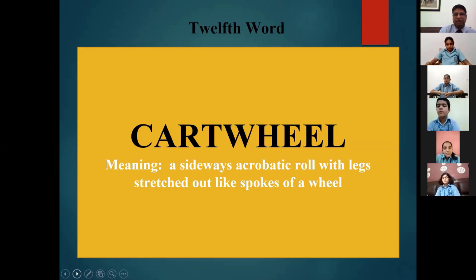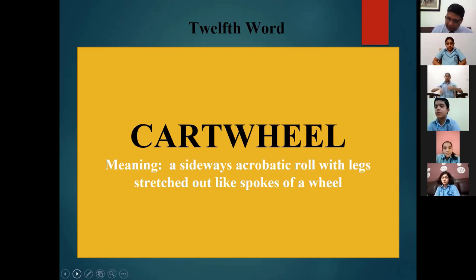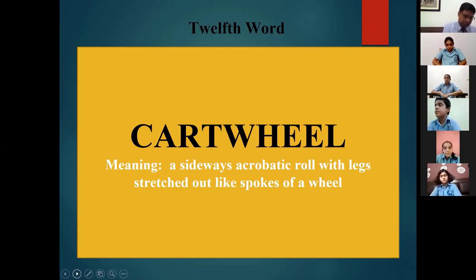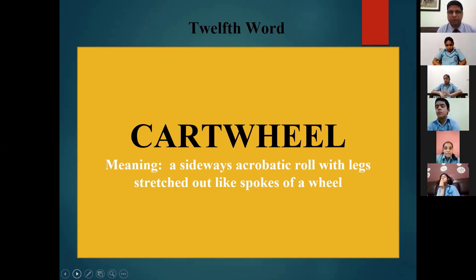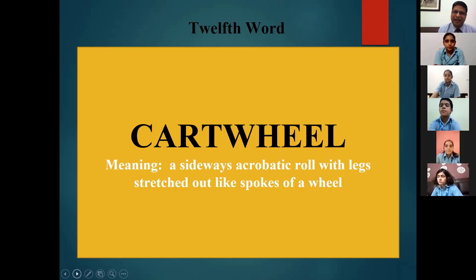A sideways acrobatic roll with legs stretched out like spokes of a wheel — you might have seen this acrobatic skill on annual day as a regular feature of gymnastic activities. Scores after round two: Dyanan House six marks, Vyas House eight marks, Buddha House eight marks. All are going neck to neck — virtual clapping for everyone.